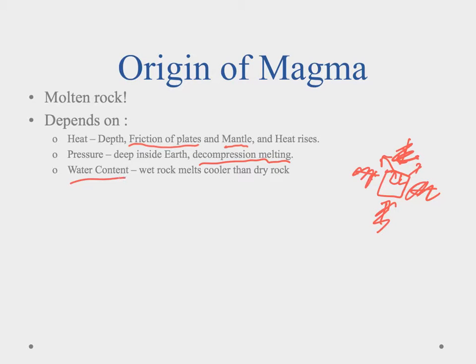And then finally we have water content. Rocks that have a little more moisture in them tend to melt at a cooler temperature than rocks that don't. So a couple percent of water is going to translate to hundreds of degrees cooler. And that helps out too. If we can get a little bit of water into the rocks, into the minerals, then what's going to happen is they'll melt a little bit faster.